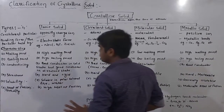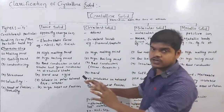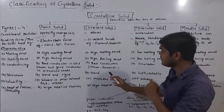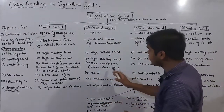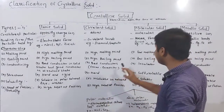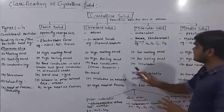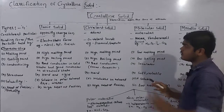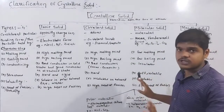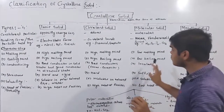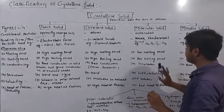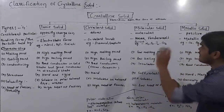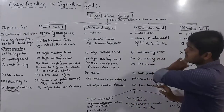Ionic solid is a bad conductor in solid state but a good conductor in dissolved state. Covalent solid is entirely a bad conductor, except graphite. Molecular solid is an insulator — it does not conduct current at all.